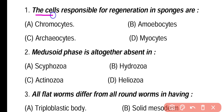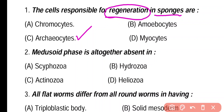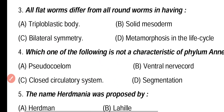Question number 1. The cell responsible for regeneration in sponges are: chromocytes, amebocytes, archaeocytes, myocytes. Correct answer is option C. Archaeocytes are the totipotent cells in sponges and they are responsible for regeneration.